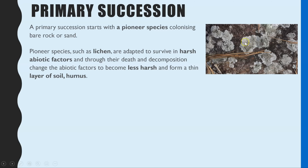By coexisting as lichen, these two species are able to survive even though there is very little water available, no food source other than light, and no minerals except those locked in the rock. That is why they can withstand such harsh abiotic factors, and with next to no competition from other species, lichen are very effective pioneer species.